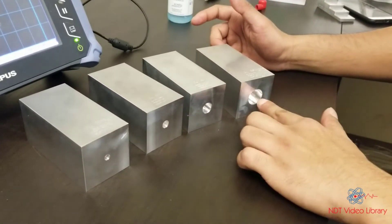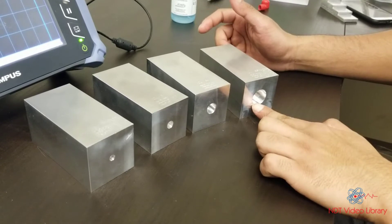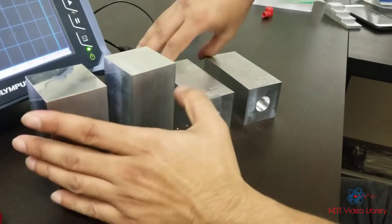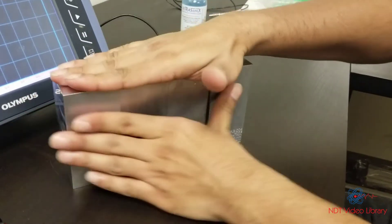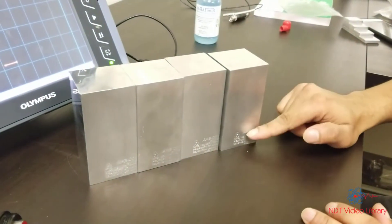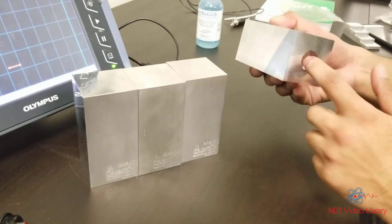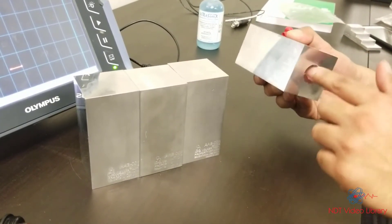You see one, two, three, four blocks. The size of the hole increases from block one to block four. But the height of all the blocks stays the same - they are of the same exact height. So the distance that the sound has to travel to hit the hole is equal in all these blocks. The only thing that changes is the size of the hole.